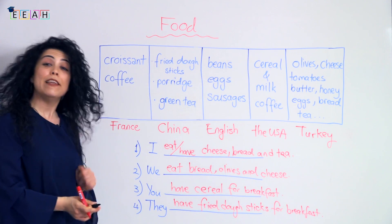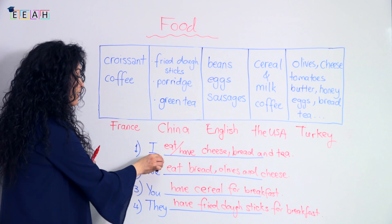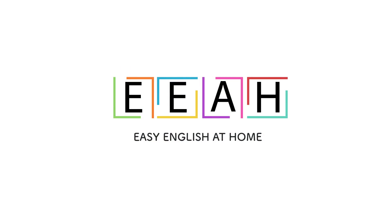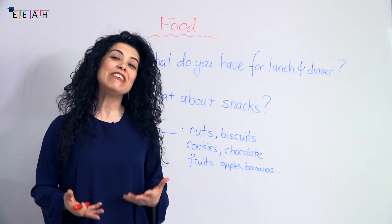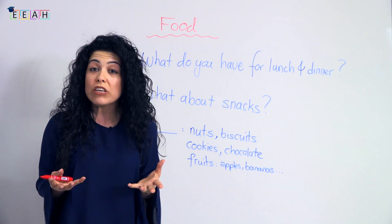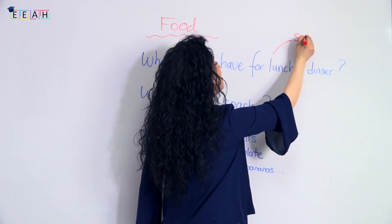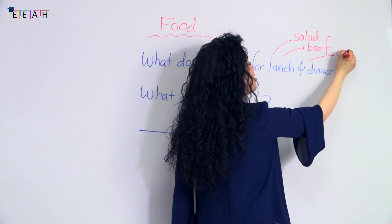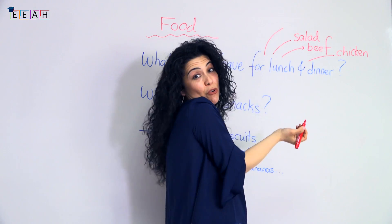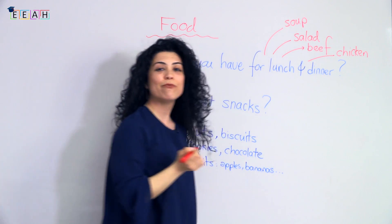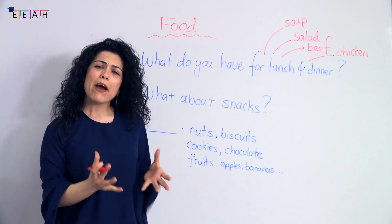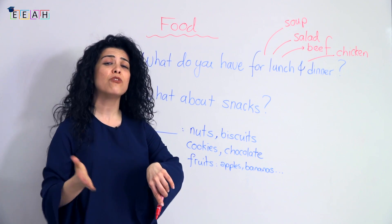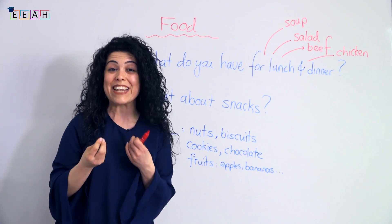Let's remember food words and sentences with I, we, you, and they. Now, what about lunch and dinner? What do you usually eat for lunch, and what do you eat for dinner? You can have salad, beef, chicken, or soup if you want a light lunch — and many other things as well. What about snacks? When you get hungry between breakfast and lunch and there's still a lot of time before lunch, what do you do? We have snacks!